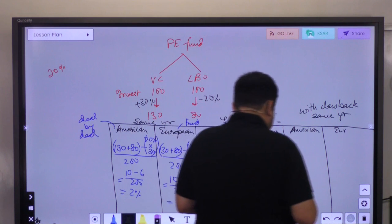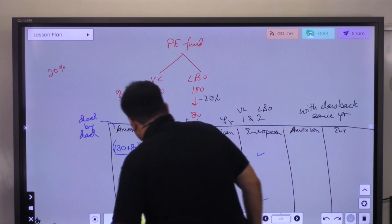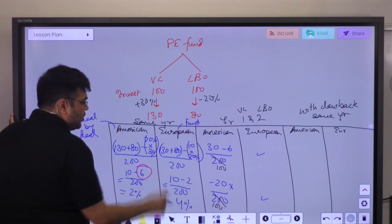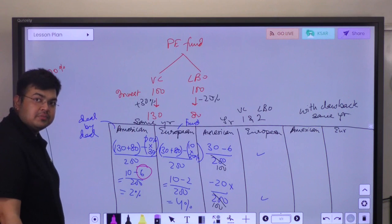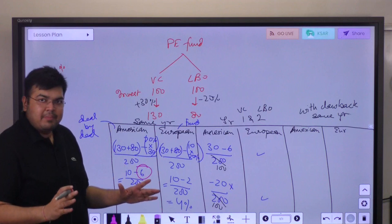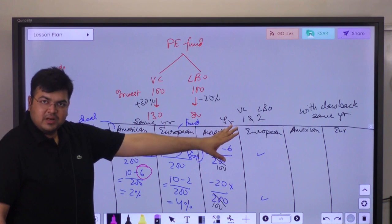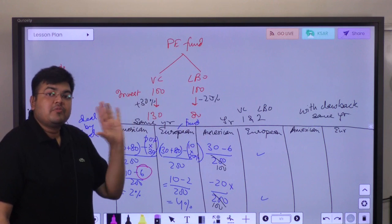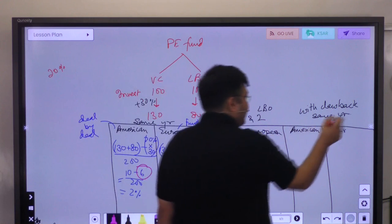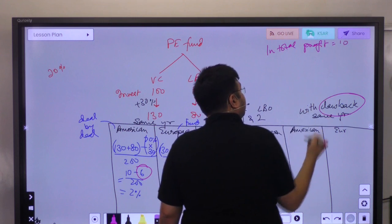There is something called a clawback provision. In clawback, you paid an incentive fee of 6 million in year 1 on a profit of 30. Then there was a loss of 20 in year 2. Ultimately, your total profit is 10. You're supposed to pay 20% of 10, which is 2 million. But you already paid 6 million. So on a total basis: total profit equals 10, total deserved incentive equals 2 million, but you received 6 million — so you must pay back 4 million.